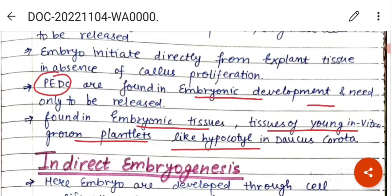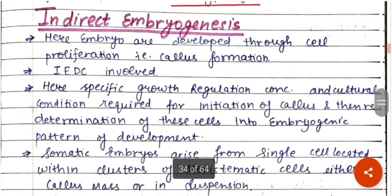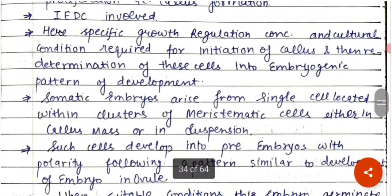In indirect embryogenesis, embryos are developed through cell proliferation — that is, callus formation. The cells involved are IEDC: induced embryogenic determined cells. Specific growth regulation, concentration, and cultural conditions are required for initiation of the callus.